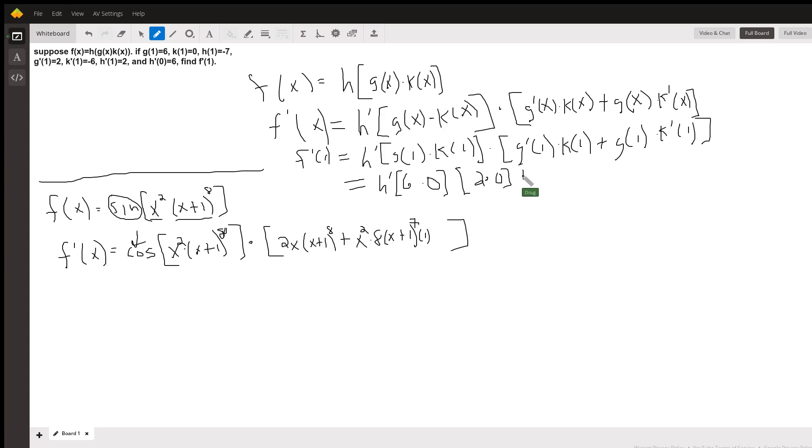Plus—whoops, I don't want to put a bracket there. Plus g of 1 is 6, k prime of 1 is negative 6. And I'm going to draw a separator here.